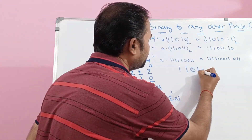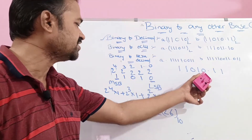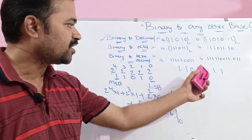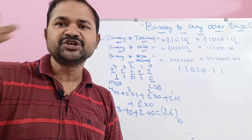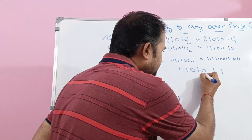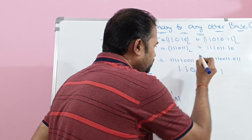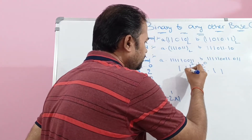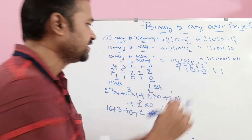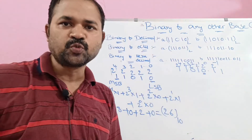Now for the second example: 11010.11. The integer part 11010 is already calculated as 26. For the fractional part after the dot, we write 2 power −1 for the first fractional bit, 2 power −2 for the next, and so on.